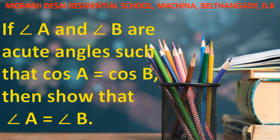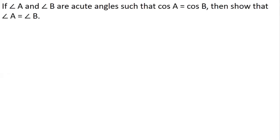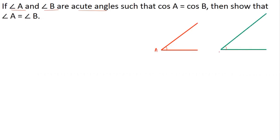If angle A and angle B are acute angles such that cos A is equal to cos B, then show that angle A is equal to angle B. Here angle A and angle B are acute angles, and it is given that cos A is equal to cos B.